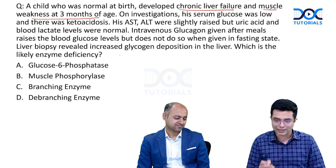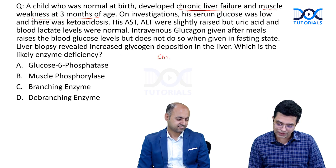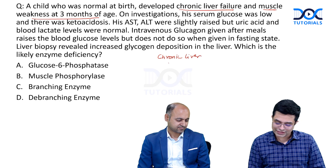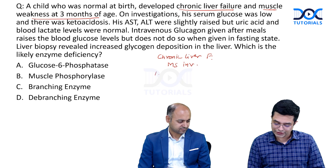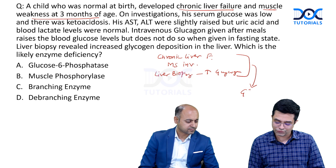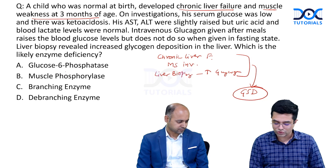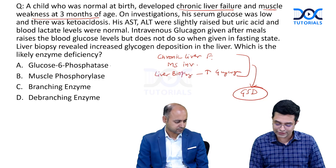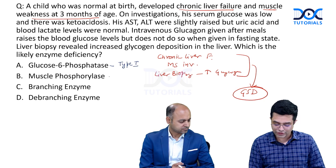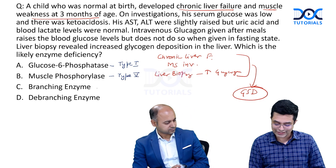This child was normal at birth, is having chronic liver failure, muscle involvement, and liver biopsy showing increased glycogen — so we are looking at a glycogen storage disorder. Looking at the four options, they all concern glycogen storage diseases. Glucose-6-phosphatase deficiency is Type 1 (Von Gierke disease), muscle phosphorylase is Type 5, branching enzyme is Type 4, and debranching enzyme is Type 3.